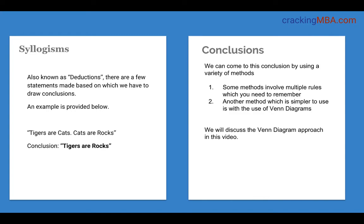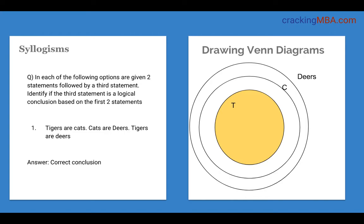There are a couple of ways to derive conclusions. Some methods have various rules you need to memorize and then apply to arrive at conclusions. Another method is by using Venn diagrams. If you are comfortable with Venn diagrams, go ahead; otherwise you can look at the rules approach. In this video we are going to look at the Venn diagram approach.